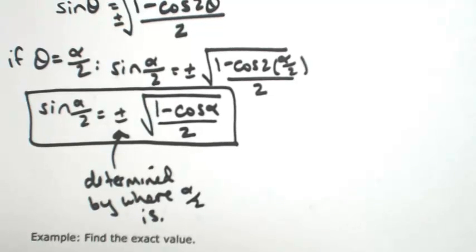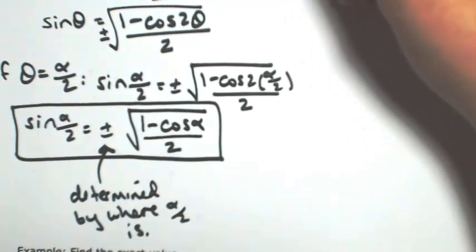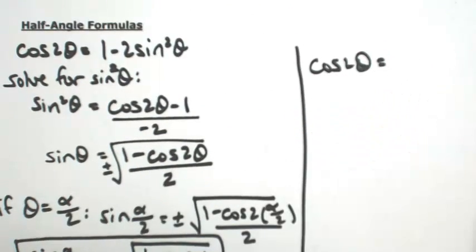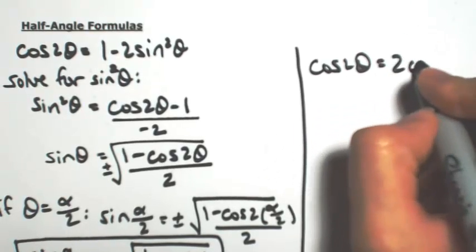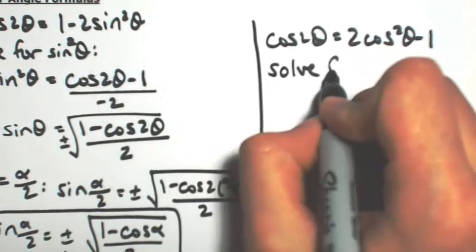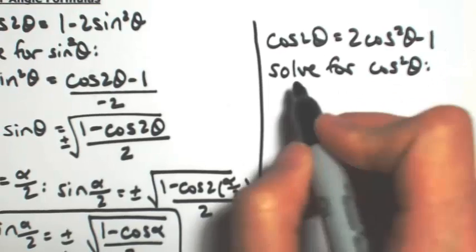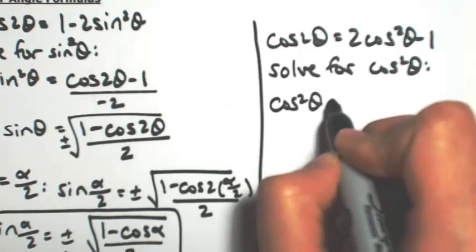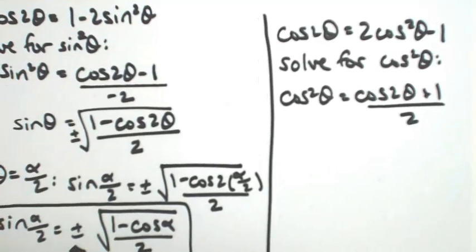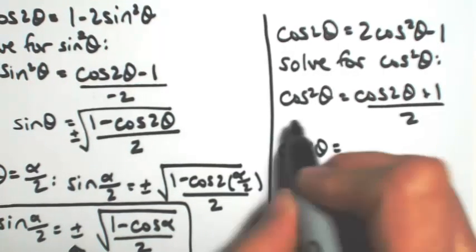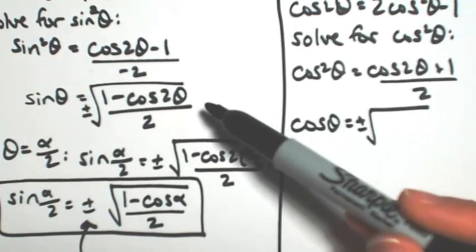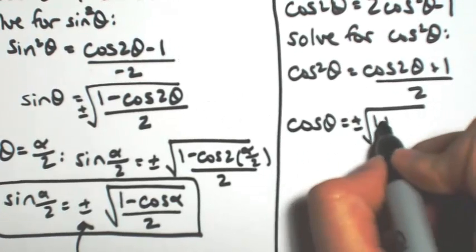Now I need to find one for cosine, so let's do the exact same thing again. We'll use the double-angle formula cosine of 2 theta equals 2 cosine squared theta minus 1, and solve for cosine squared theta. So cosine squared theta equals cosine of 2 theta plus 1, divided by 2. So cosine of theta is plus or minus the square root, and rearranging the top to look similar to the sine formula: 1 plus cosine of 2 theta, all over 2.